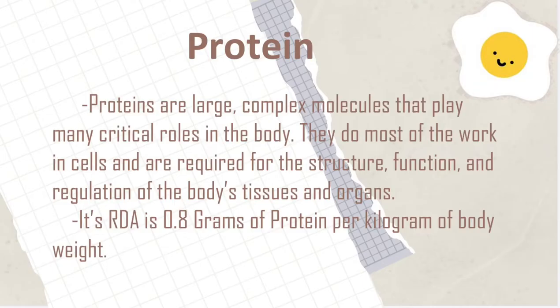First, we have protein. Proteins are large, complex molecules that play many critical roles in the body. They do most of the work in cells and are required for the structure, function, and regulation of the body's tissues and organs. Its RDA is 0.8 grams of protein per kilogram of body weight.